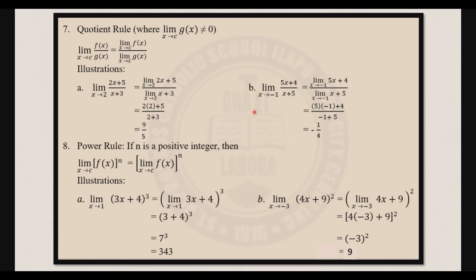Next: find the limit of 5x plus 4 all over x plus 5 as x approaches negative 1. Following the sum rule for the numerator, we have 5 times negative 1 plus 4 over negative 1 plus 5. Simplified, that gives us negative 1.